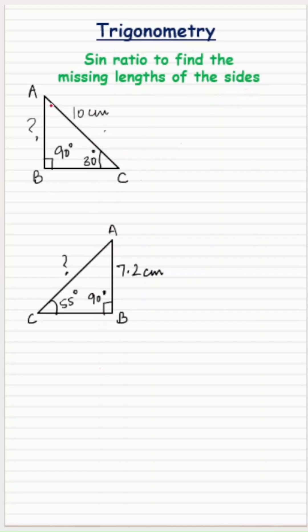So my first question is ABC is a right angle triangle, angle B is 90 degrees, angle C is 30, AC is given as 10 centimeters. I need to find the length of the side AB.